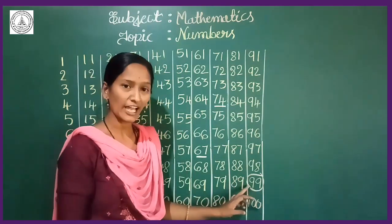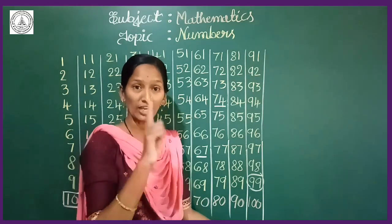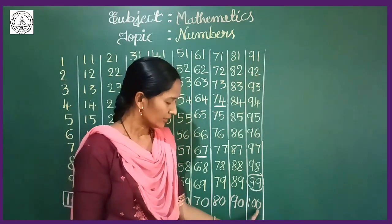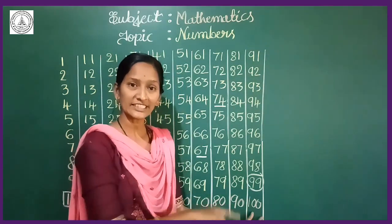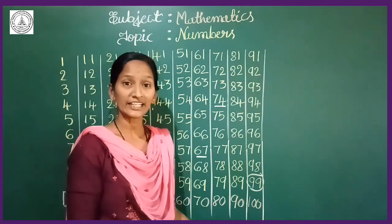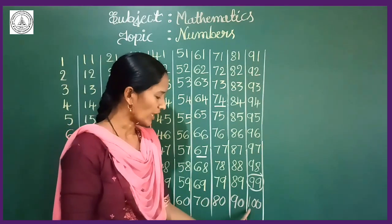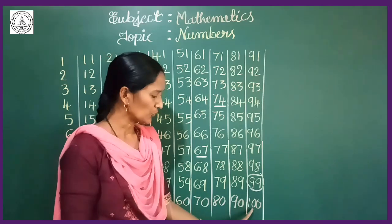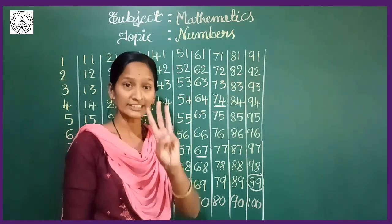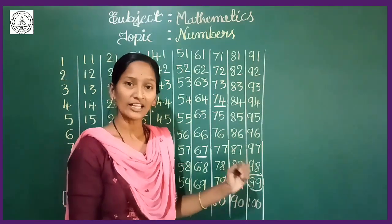So after 99, you are getting 100. See, look here — how many digits does it contain? It contains 3 digits: 1, 2, 3. The total digits are 3, so it is a 3-digit number.